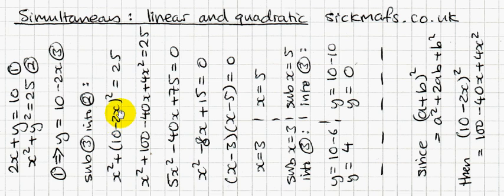So I expand this bracket. Very easy to expand something squared using this idea here. If you've got a plus b squared, you just square the first one, square the last one, and then times the two numbers together, double them, which gives you the 2ab bit.